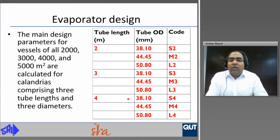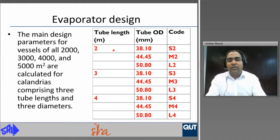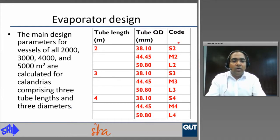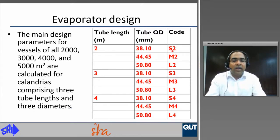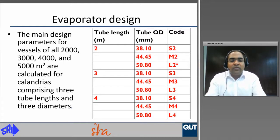The main design parameters for all four heating surface areas are calculated for calendrias comprising 3 tube lengths and 3 tube diameters. Tube lengths of 2, 3, and 4 meters and tube diameters of 38.1, 44.45, and 50.8 millimeters are used. A code is given to each tube dimension: S for small diameter 38.1 mm, M for medium diameter 44.45 mm, and L for large diameter 50.8 mm, with the number representing the tube length. These codes will be referred to throughout the presentation.